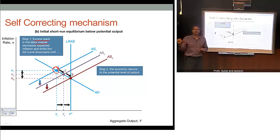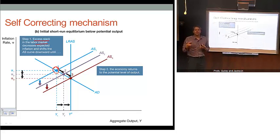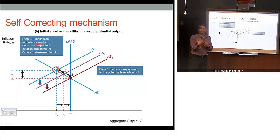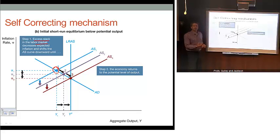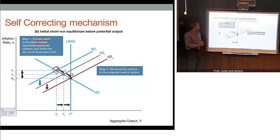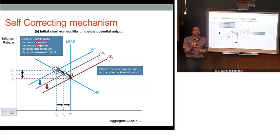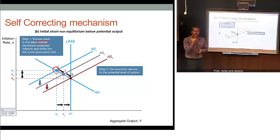We have idle workers, idle capacity and capital. That puts downward pressure on the price of capital and wages. If more people are unemployed, they'll be willing to work at lower wages or at least a smaller increase in wages. As labor costs decline, inflation should go down. People expect that process to occur when we have these recessionary gaps or slack in the labor market, so inflation expectations go down.